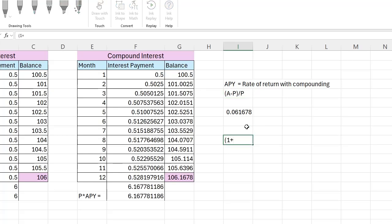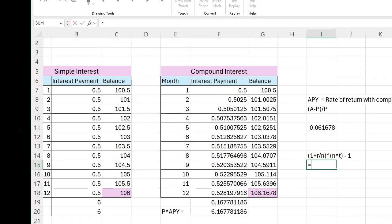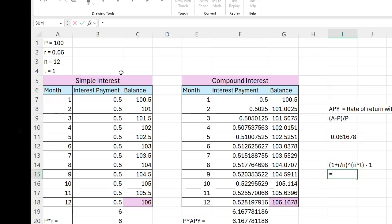(1 + R/N) raised to the N times T, minus 1. In this example, here's everything I need to know. I have 1 plus my interest rate, which was 0.6, divided by 12, the number of times I was compounding. I'm raising this to the power of N, which is 12, times T. T was just one year in this example. And then I'm subtracting 1.